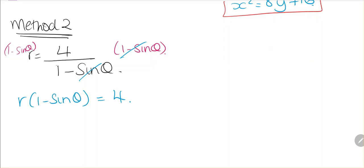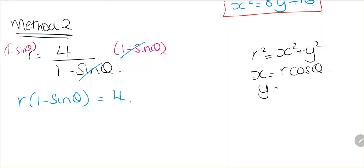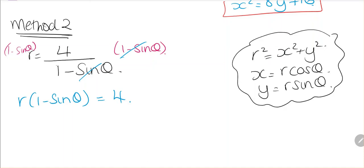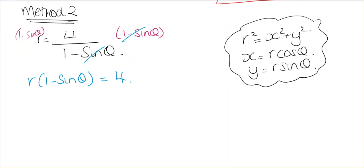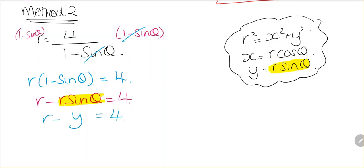There are a few things we need to know: r squared equals x squared plus y squared, x equals r·cosine(theta), and y equals r·sine(theta). Multiplying out gives r minus r·sine(theta) equals 4. Since r·sine(theta) equals y, we replace that with y. Then taking y to the other side by adding y to both sides gives r equals 4 plus y.